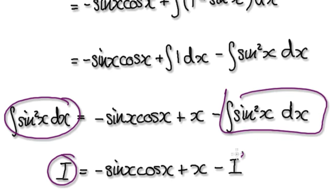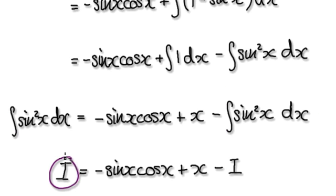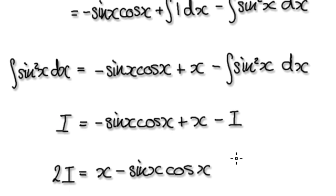So that's capital I. This thing here is capital I. And now you've got exactly the same. Then add I equally to both sides. That will then give you this.